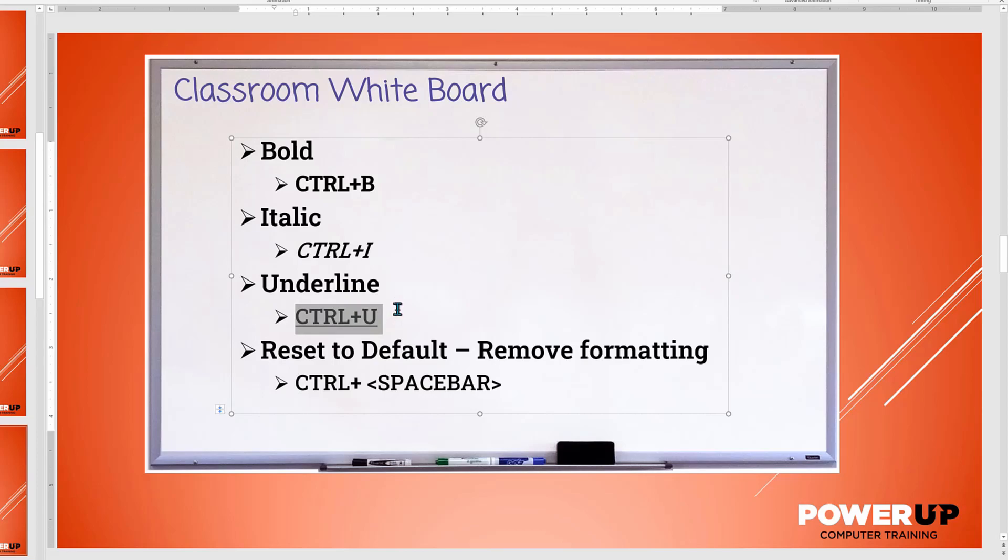Note that these are toggle commands, meaning that if you repeat the command, it will turn the formatting off or back on again. Here I have a selection of text turned on, and I'm doing the various commands to turn them on and off and on and off.